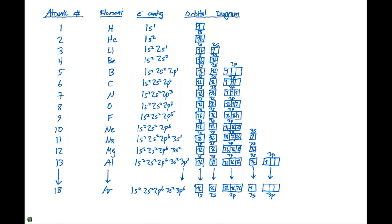Make sure we follow our appropriate rules. This is how you would write the block diagrams for the first 18 elements. In the next video, I will go through and write out the electron configuration and block diagrams for elements 19 through 30.